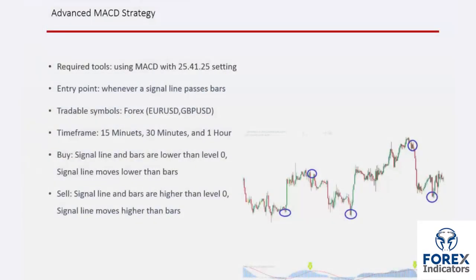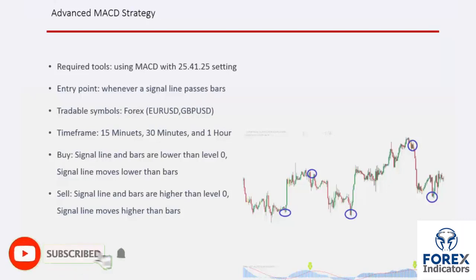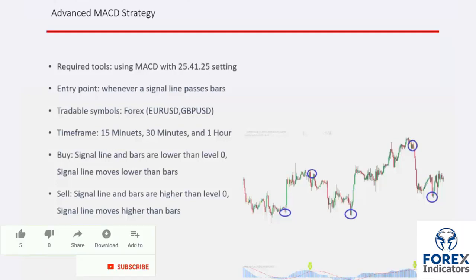Advanced MACD strategy: advanced MACD is appropriate for a range market, while it generates false signals on volatile markets that would result in capital loss. MACD property values should be 25, 41, and 21.